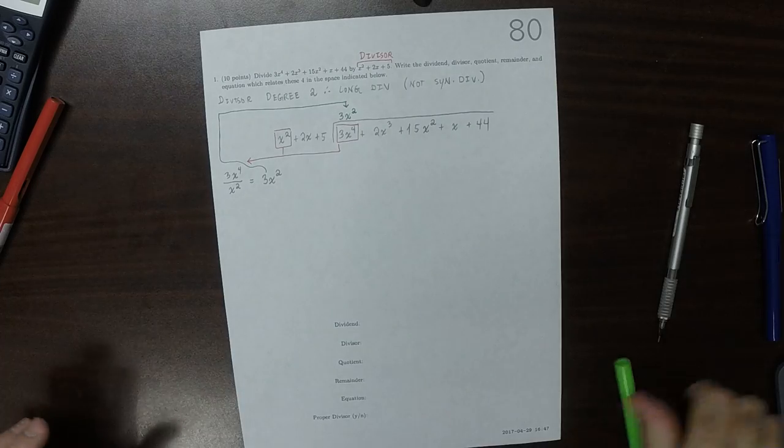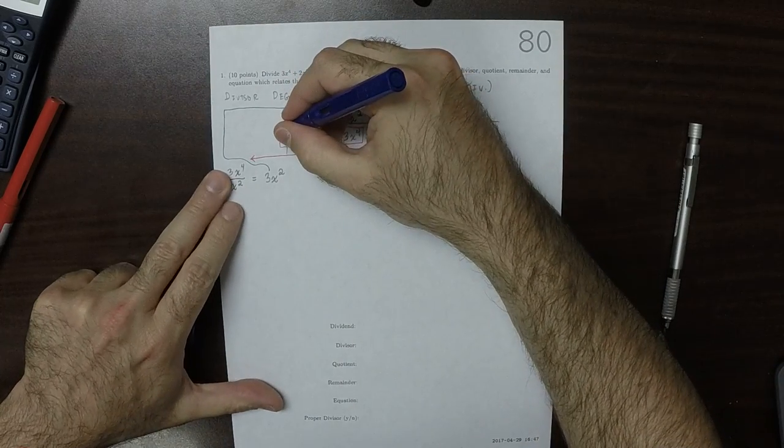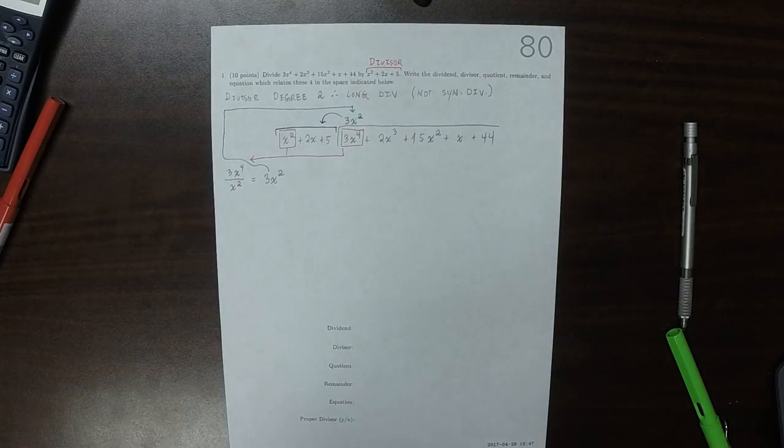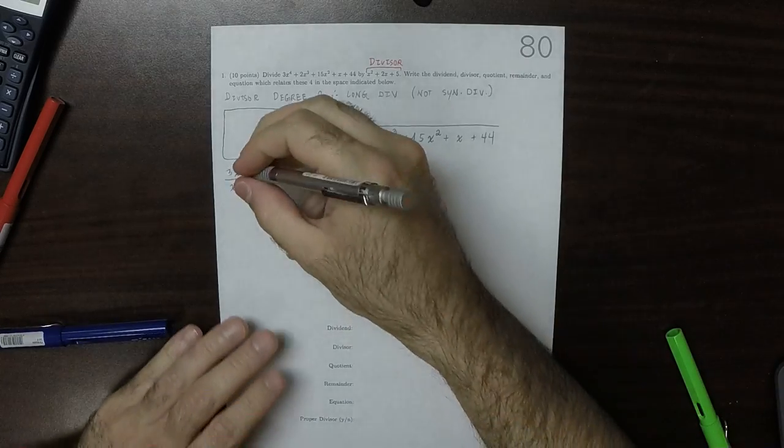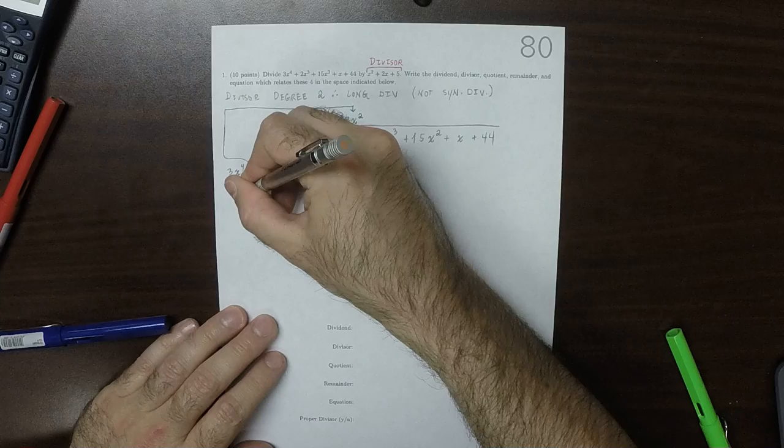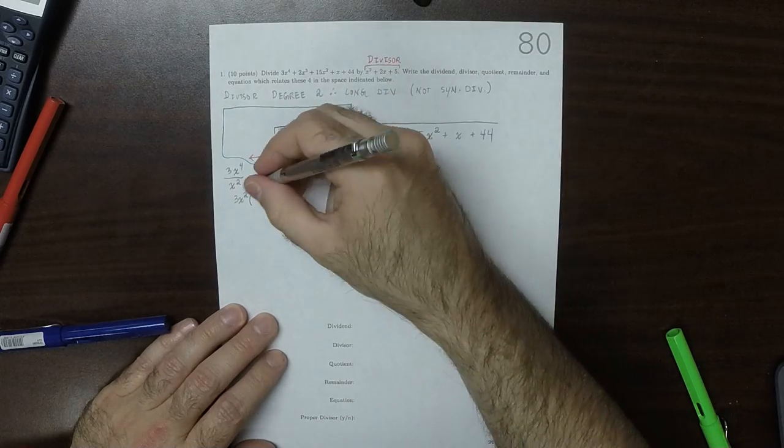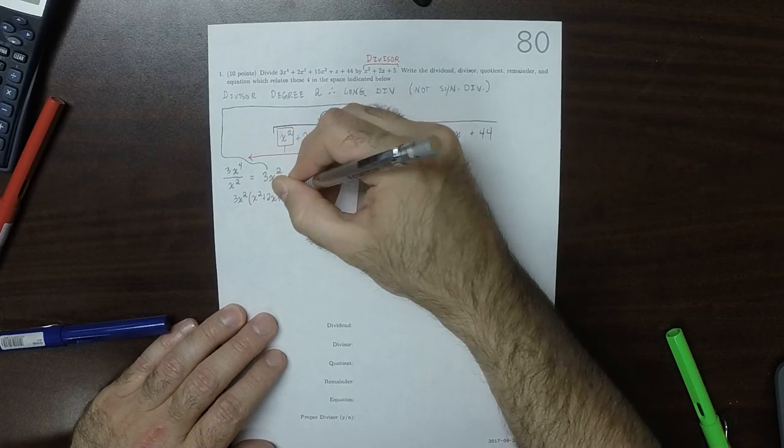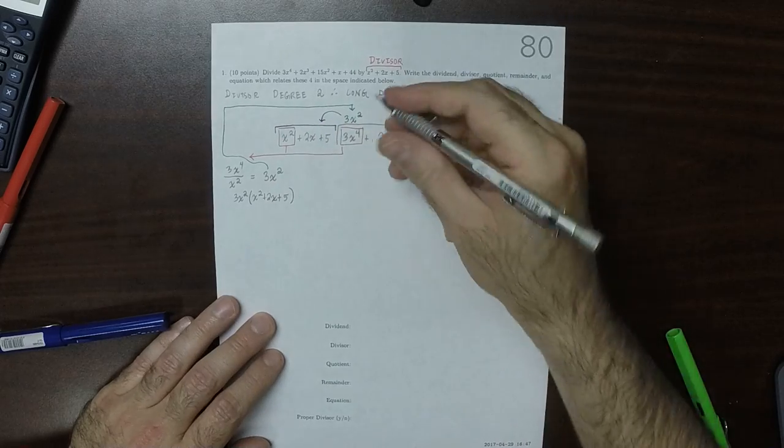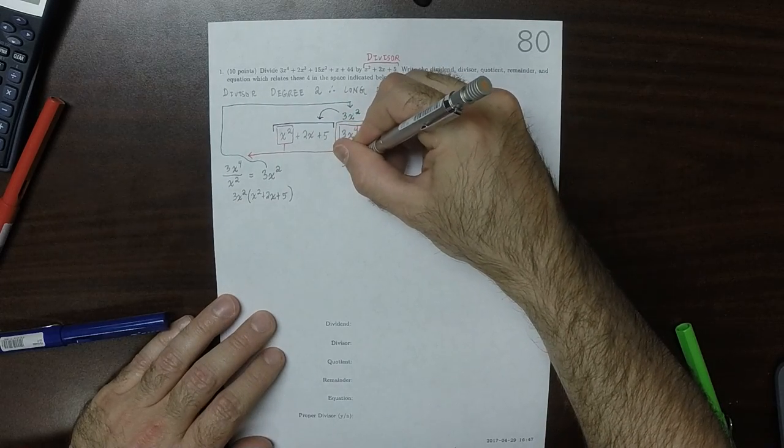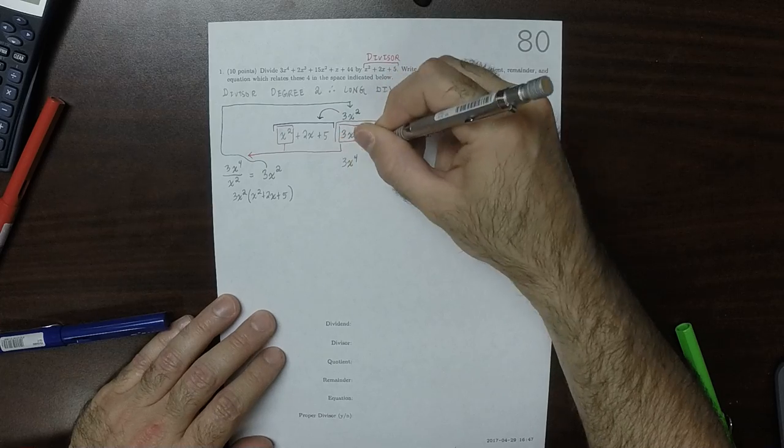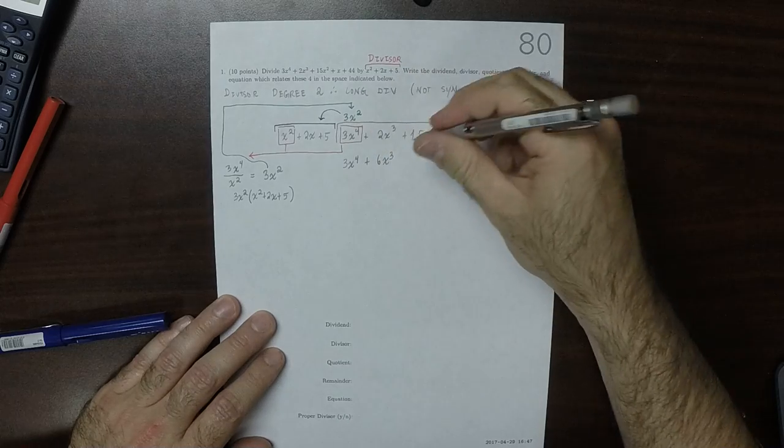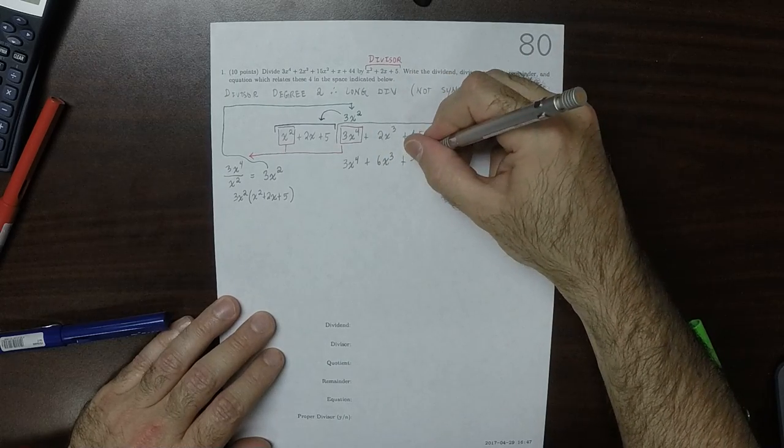Then that partial quotient jumps off the house, hits the divisor on the way down. 3x squared multiplied by x squared plus 2x plus 5 gets written under here. That's 3x to the 4 plus 6x to the 3 plus 15x squared.